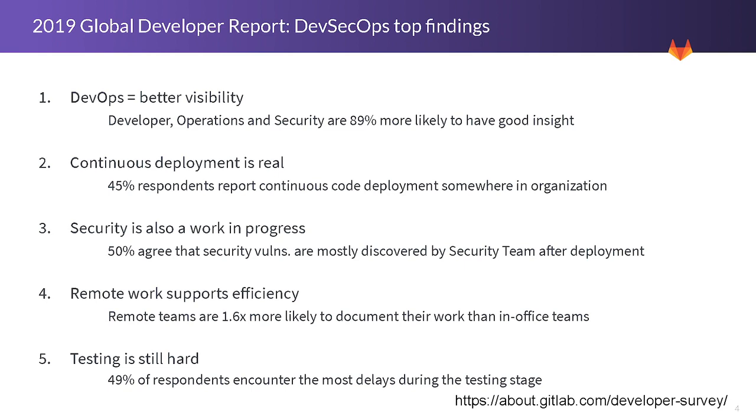Security is still a problem. About 50% of respondents said they're developing quickly, but security is coming up and biting them in the back end after they've done development. What that leads to is context switching — developers have forgotten what they're doing and have to fight with security to explain why they wrote a piece of code.